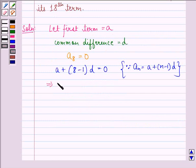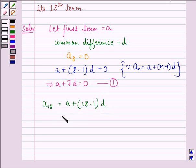This implies A + 7D = 0, and this we call equation 1. Now A₁₈, that is the 18th term, is A + (18-1)D = A + 17D.